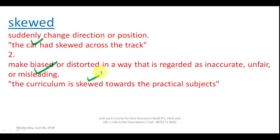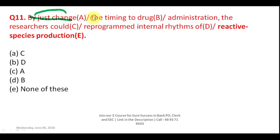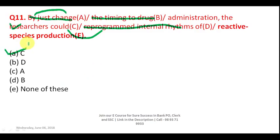Question 11: 'By just change the timing of drug administration, the research could now...' — 'by' is followed by the -ing form, so it should be 'by just changing.' Also, 'could' is followed by the first form of the verb. This part is already correct. So your answer is C, and effectively your answer is A because A contains C.